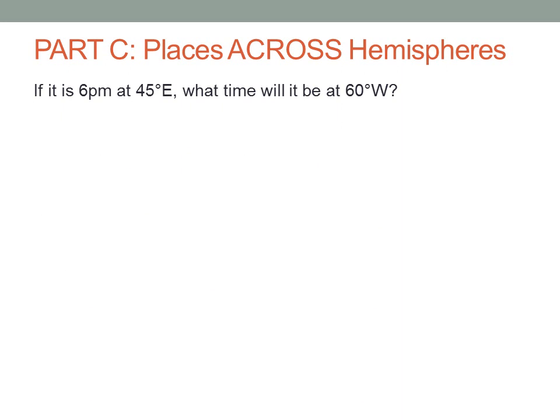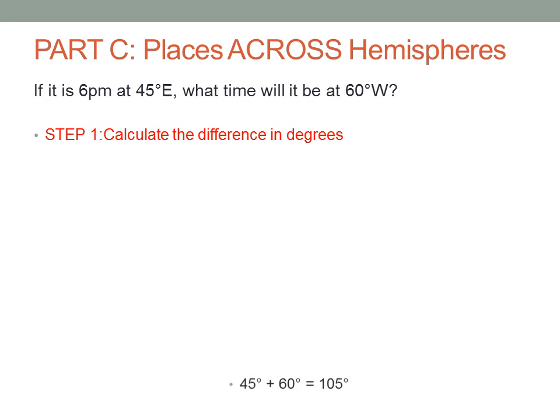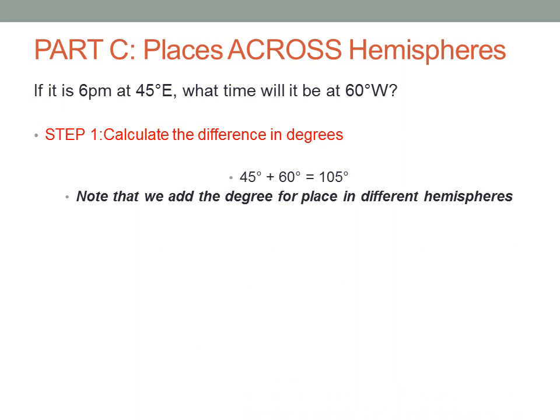If it is 6 p.m. at 45 degrees east, what time will it be at 60 degrees west? Step 1, we are going to calculate the difference in degrees. However, for this section, we are actually going to add for the difference. So we are going to add 45 degrees to 60 degrees, which will give us 105 degrees. Note that we add the degrees for places in different hemispheres — this is important.